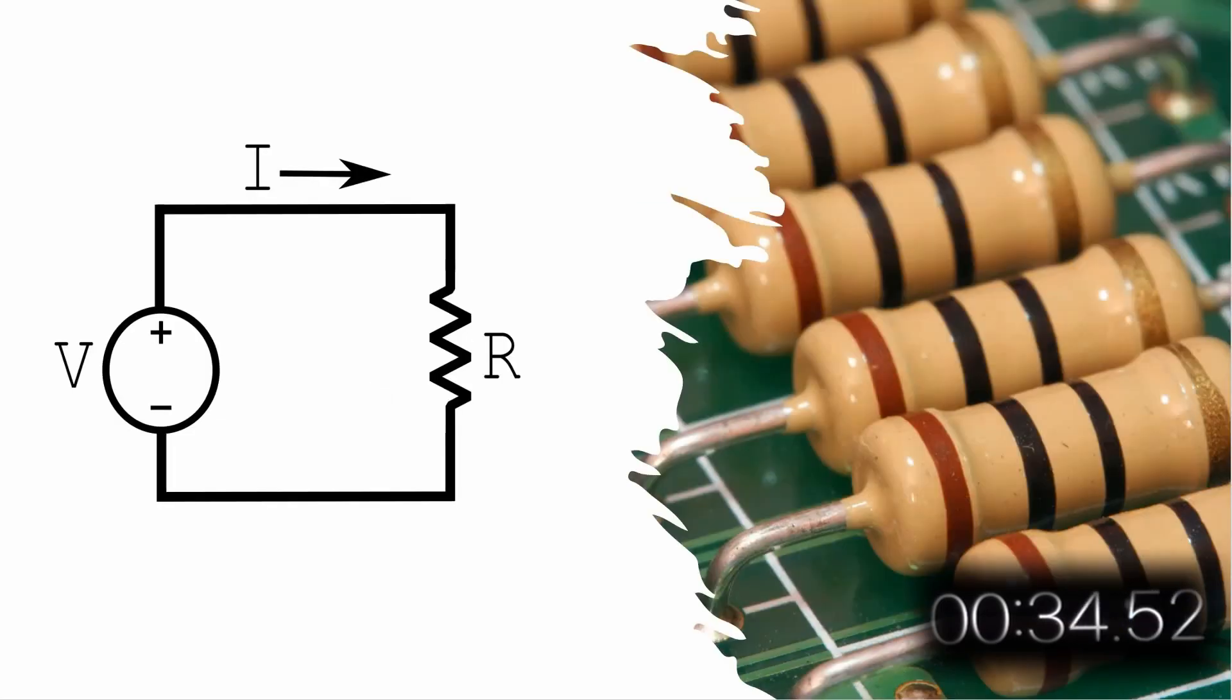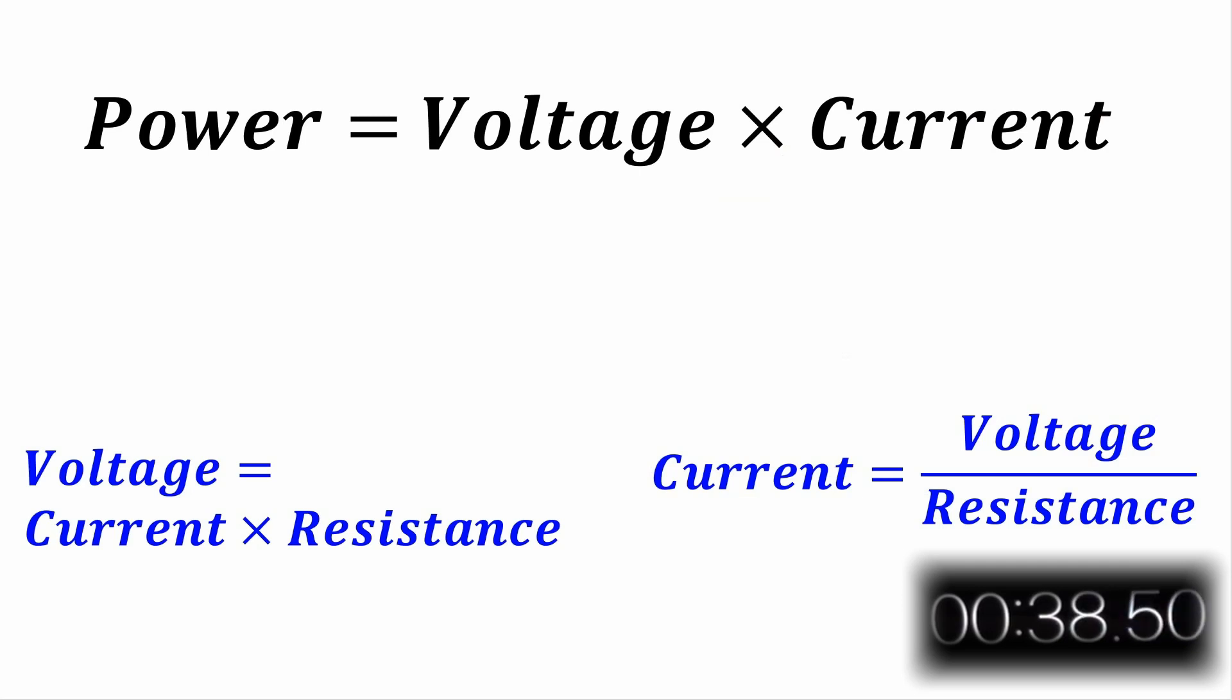When you're dealing with power dissipated by a resistor, there are other forms that the equation can take. Considering the equation, power is equal to voltage times current, and Ohm's law with its various equation forms, it is easy to see a couple of different forms of the power equation for resistors.